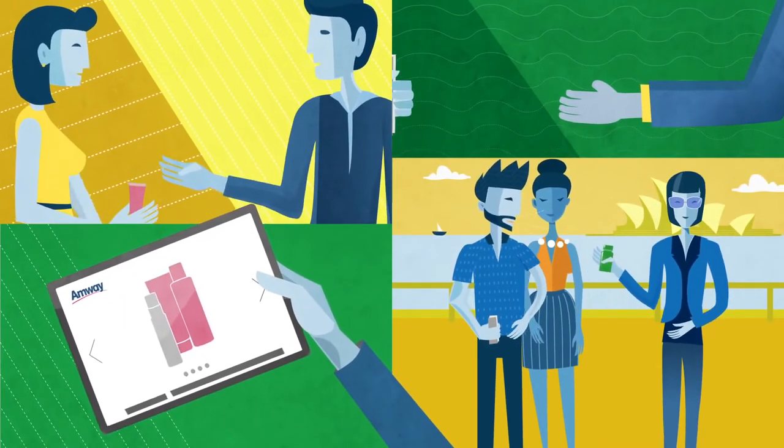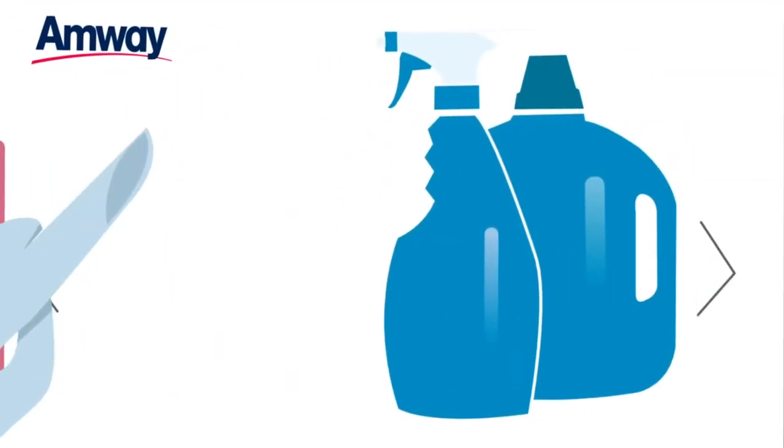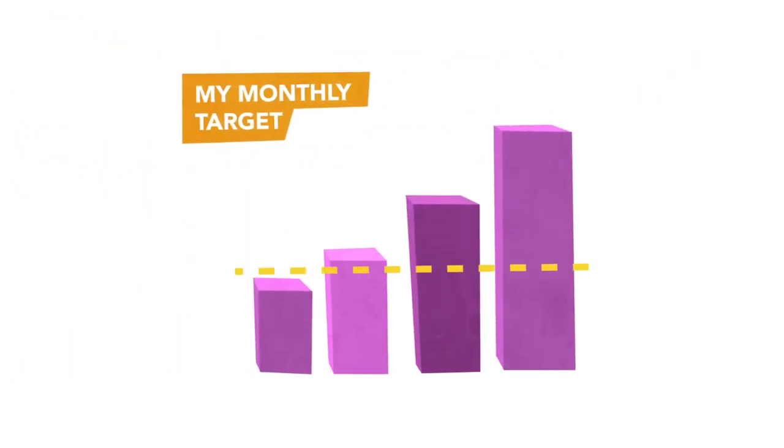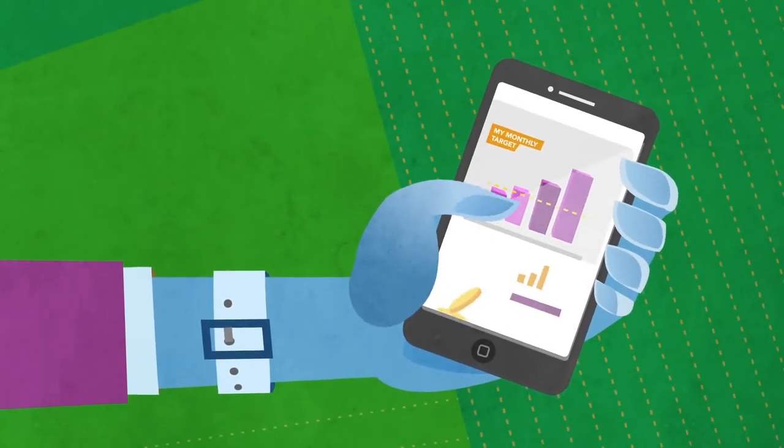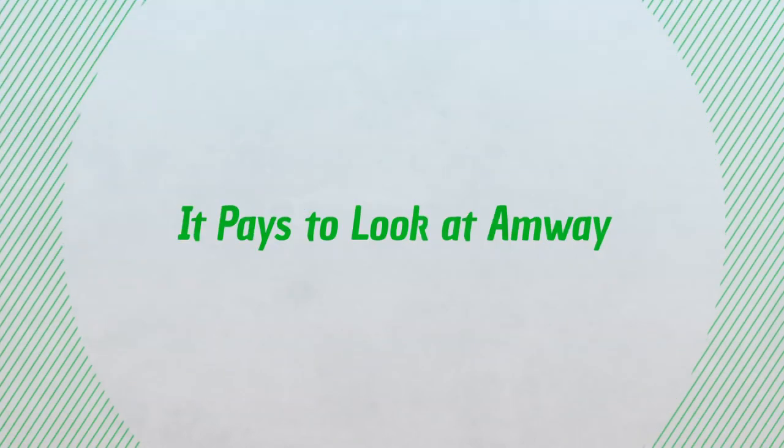This is your next level of income because every Amway product is worth points. The more products sold by you and the group, the more points you earn. When you reach different point levels you earn a bonus. As the points add up so does your bonus which may include money, trips and recognition.